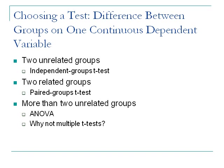Remember your Tukey test, Scheffé, Bonferroni correction — those terms from stats. After a significant ANOVA, you go back and do pairwise comparisons: is group one different from two, two different from three, one different from three. The thinking is that if you only do those comparisons after a significant ANOVA, you're reducing the likelihood of Type I error, because you already have some evidence of an effect versus just doing all pairwise comparisons without a significant ANOVA first.